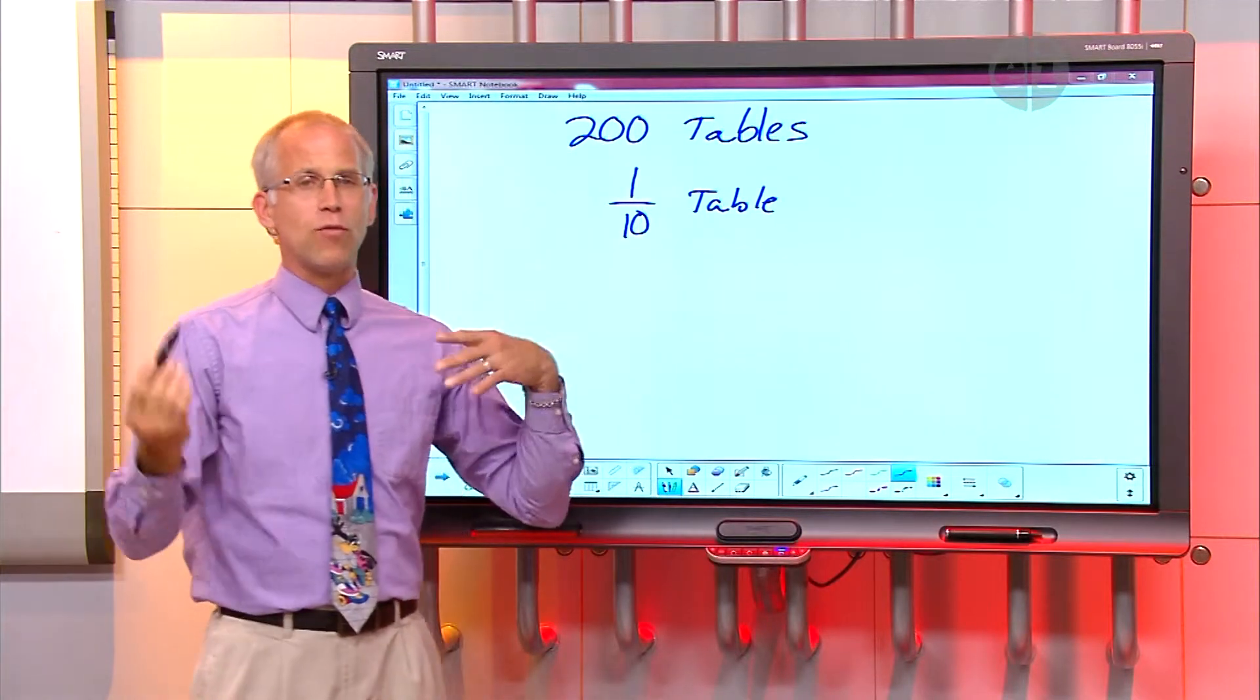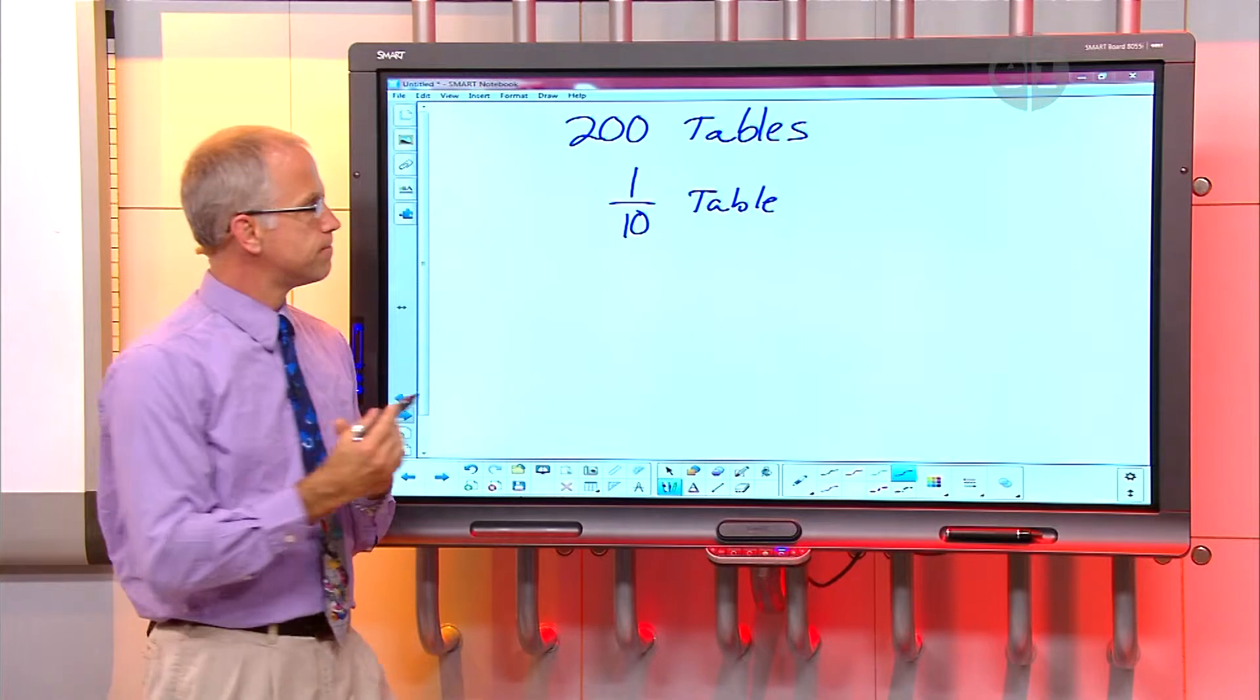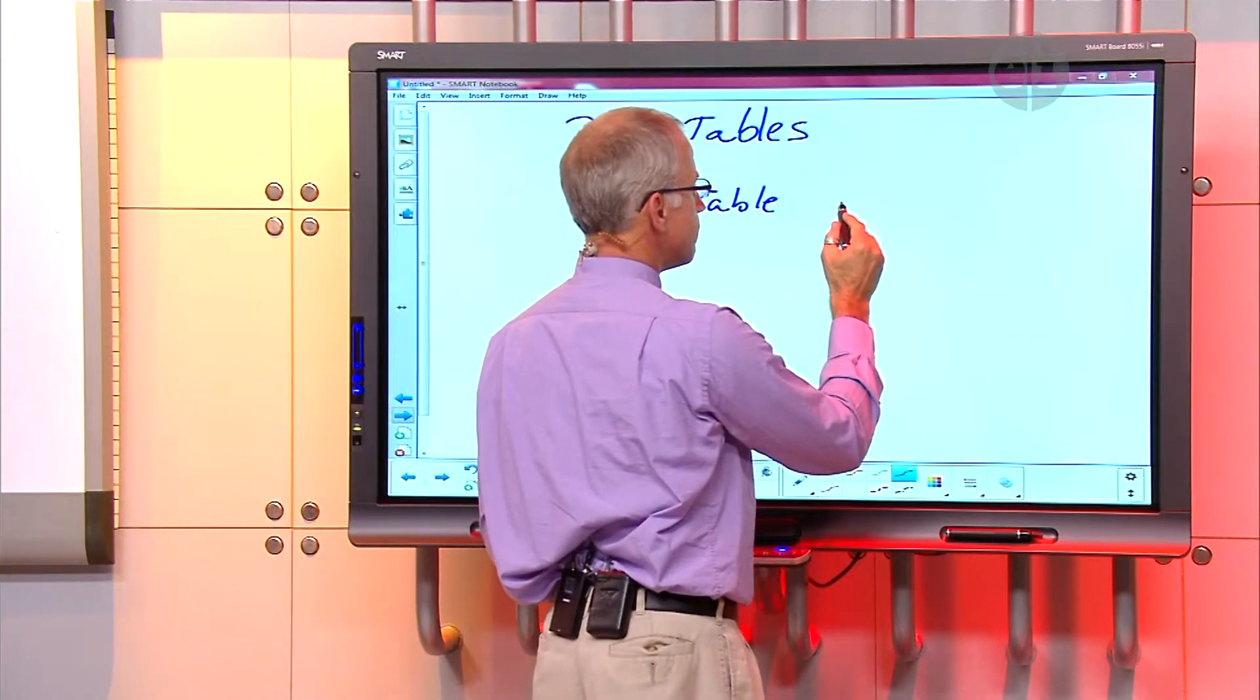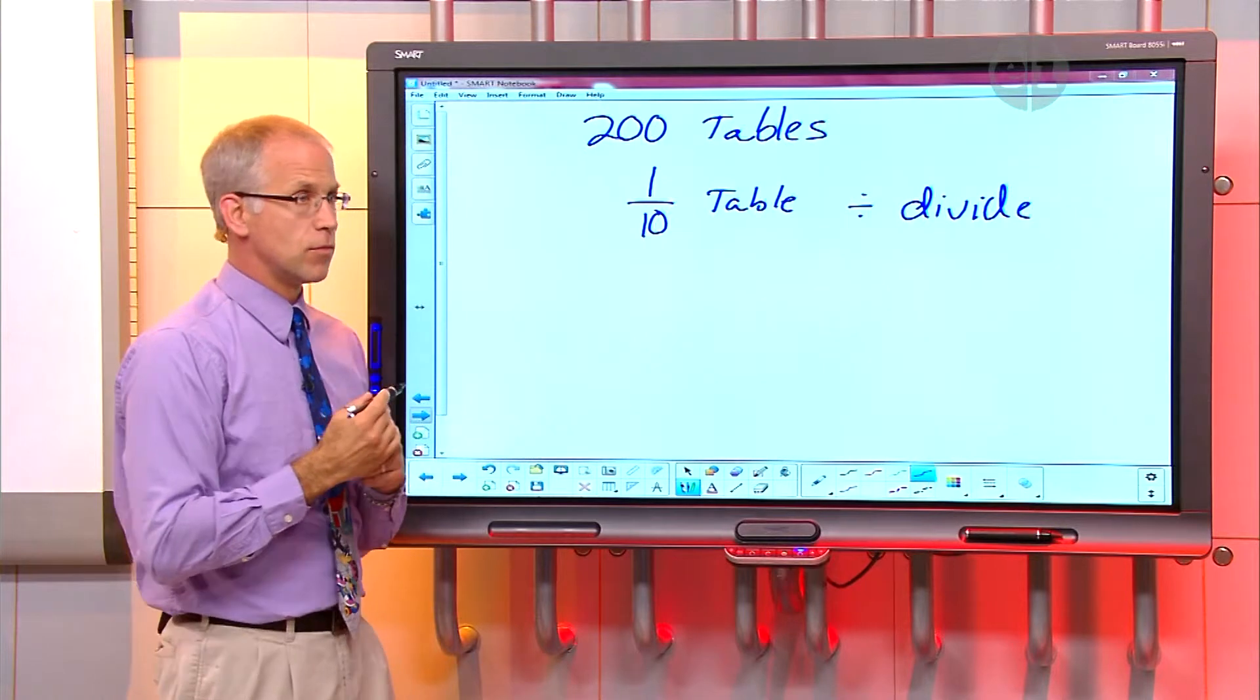Alright. So now, if we have one-tenth, that means we're gonna do what? Um, let's see, do one-tenth of two hundred. Yeah. So that means we're actually gonna divide, right? We're gonna divide two hundred by ten. Okay. Right?